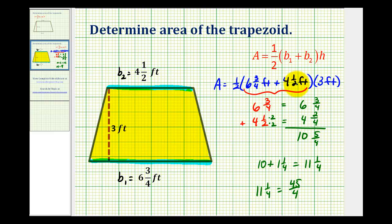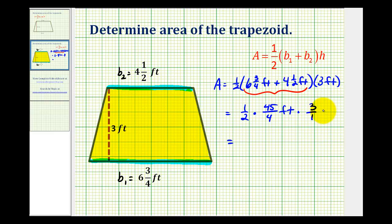So let's go ahead and rewrite this product. So we'll have one-half times forty-five-fourths feet, times three over one feet.